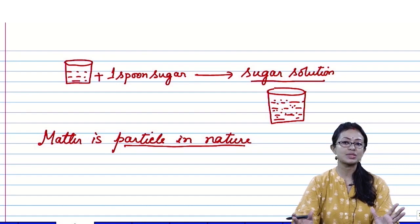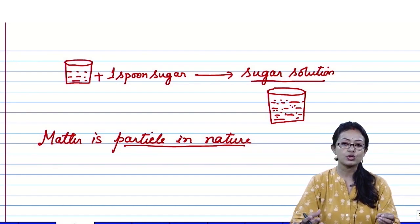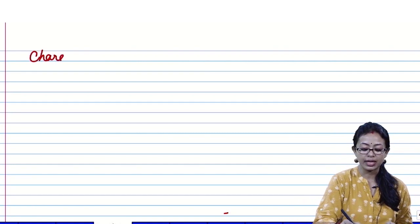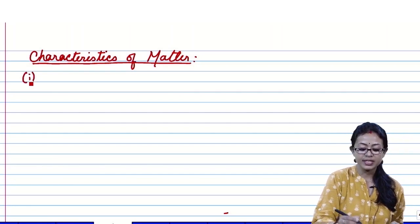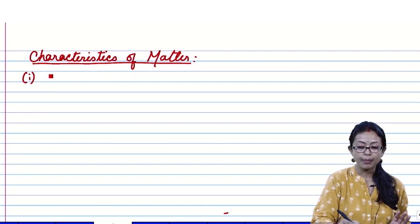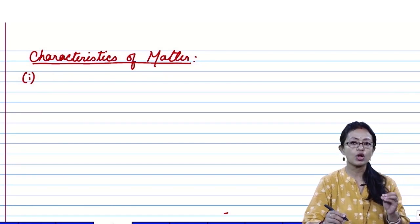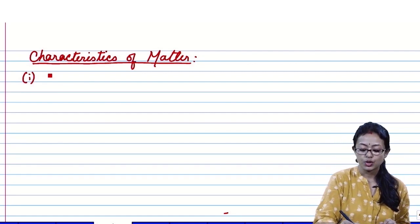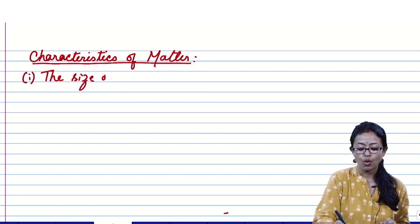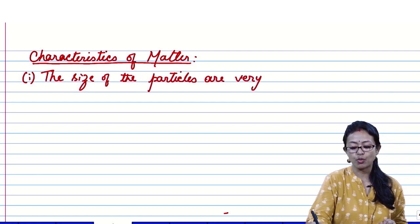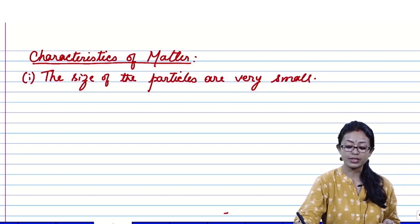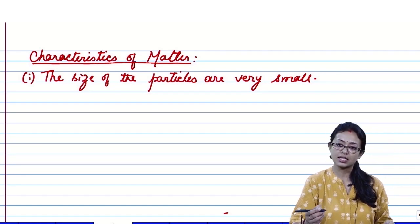Now that we know matter exists in the form of particles, we need to understand its characteristics. The first characteristic of matter is that it is made up of very small particles. The size of the particles is very, very small — this is the first characteristic. The question is: how small are these particles? Let us do another activity to show this.